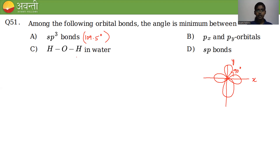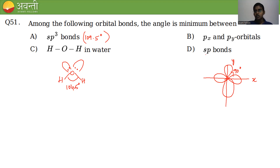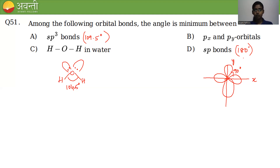In case of HOH in water, water has a bent structure with two lone pairs of electrons, and the HOH bond angle is 104.5 degrees. For sp hybridization, the system is linear, so the bond angle is 180 degrees. You can clearly see that option B — px and py orbitals at 90 degrees — has the minimum angle among the four options.